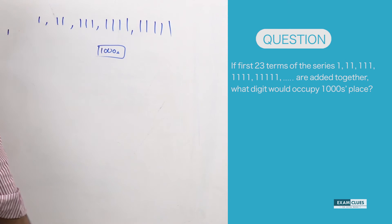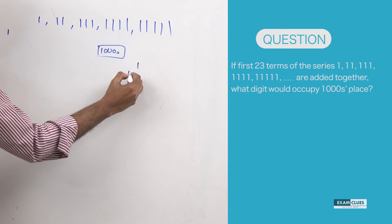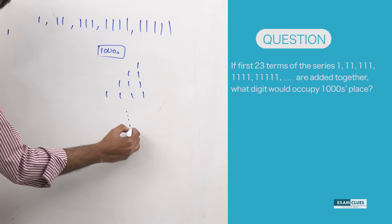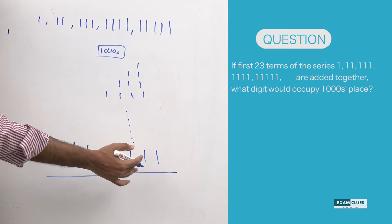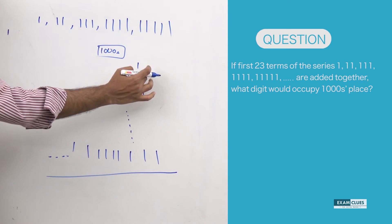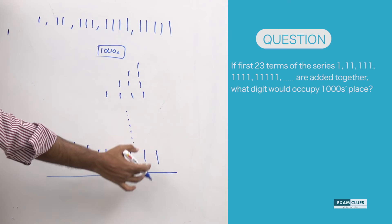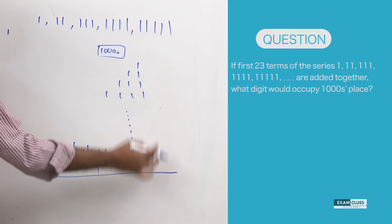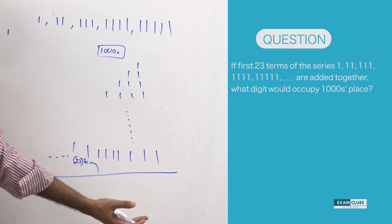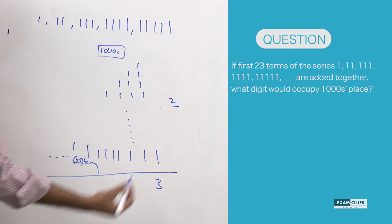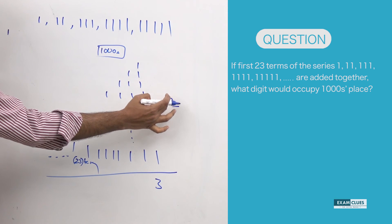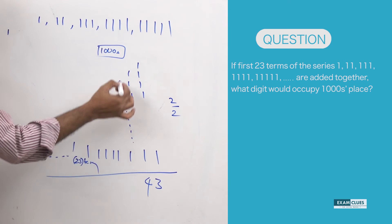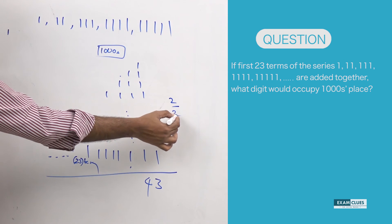So here is what we are adding: 1, 11, 111, and so on up to the 23rd term. In the units column, 23 ones are there, so 23 — write 3, carry 2. Next, 22 ones are there plus the carry of 2: 22 + 2 = 24 — write 4, carry 2. Then 21 ones plus carry 2: 21 + 2 = 23 — write 3, carry 2.